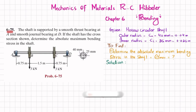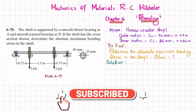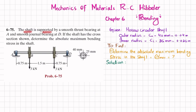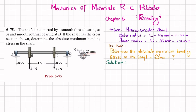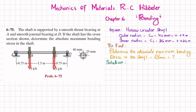Welcome back. Problem 6-75 is taken from Chapter 6, Bending, from the book Mechanics of Materials by R.C. Hibbeler. The shaft is supported by a smooth thrust bearing at A and a smooth journal bearing at D. The shaft cross-section has an outer radius of 40 millimeters and an inner radius of 25 millimeters. Determine the absolute maximum bending stress in the shaft. The total length is three meters.